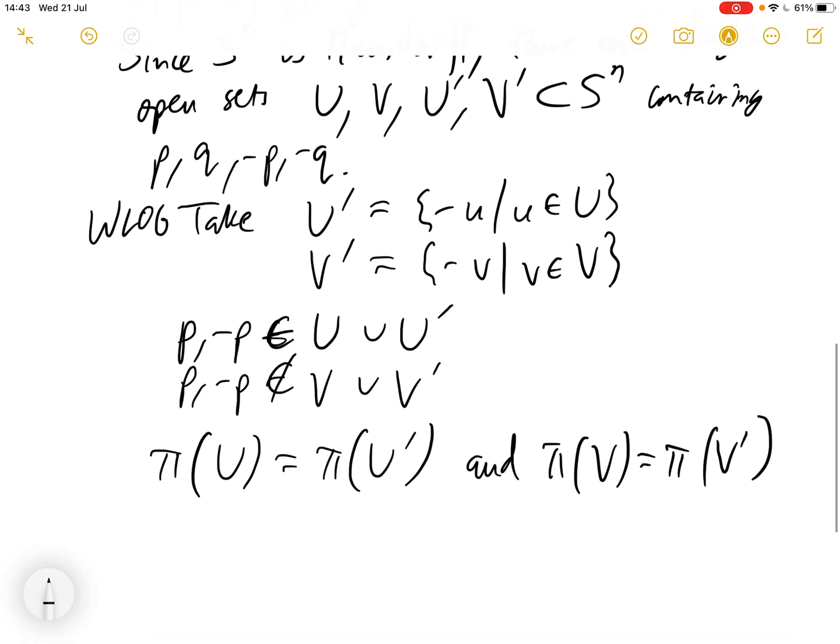So the quotient map doesn't identify any points between the open U and V sets. That is to say, pi of U intersect pi of V is empty.